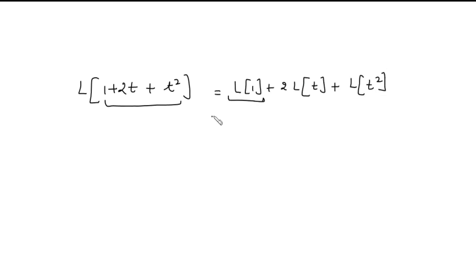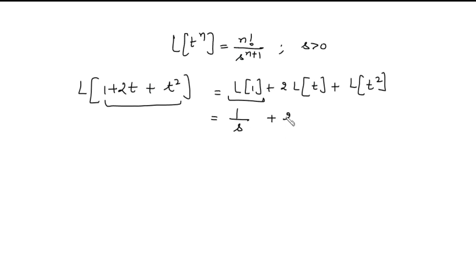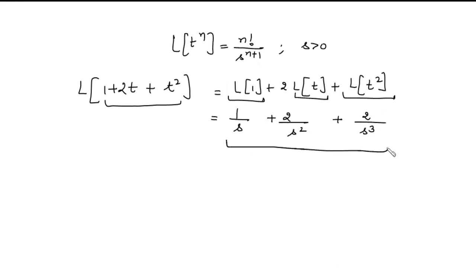So what is the Laplace of 1? It is 1/s. What is the Laplace of t? It is 1 upon s squared. And the Laplace of t squared is 2 factorial upon s cubed. The answer is provided s is greater than zero. In this way, we apply this transformation, converting from one parameter to another by finding this integral, provided the integral exists. That is the Laplace transform.